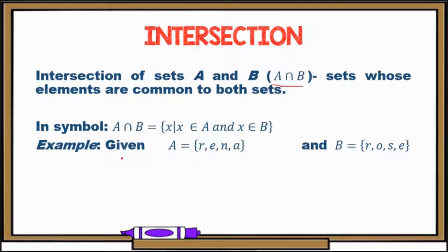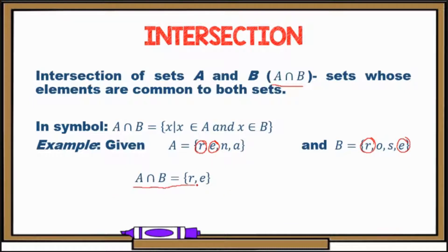Let's have an example. Again, we have R, E, N, and A for set A, and R, O, S, E for set B. For the intersection, we look for elements that are in A and in B. There are only two elements: R and E. So for the set of A intersection B, we have the elements R and E.